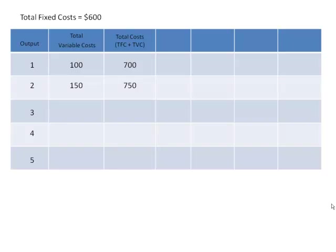Are you tracking with me okay? Be sure you are. Let's continue the progression here. Here at three units of output, we measure our total variable costs — they have grown from $150 to $210. What's going to be our total costs? Right, 600 in fixed plus 210 in variable — $810.